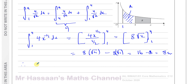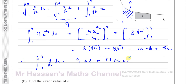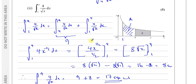So our integral between a and one of four over root x dx equals nine plus eight, which is seventeen square units. That's the answer for part two of question 5a.